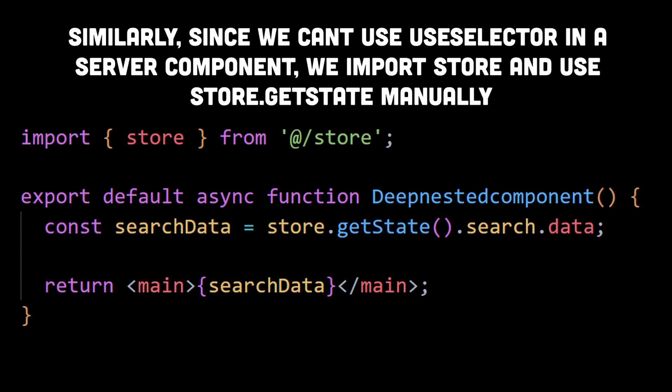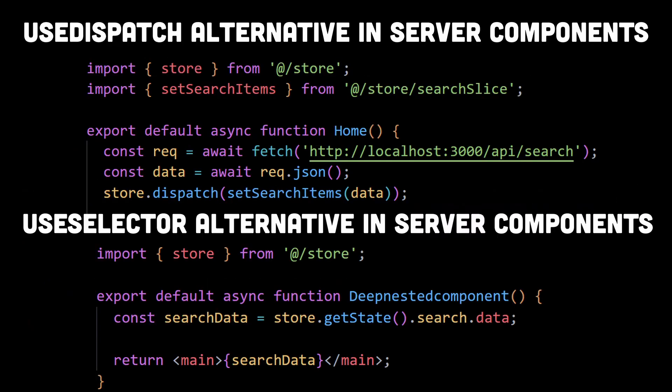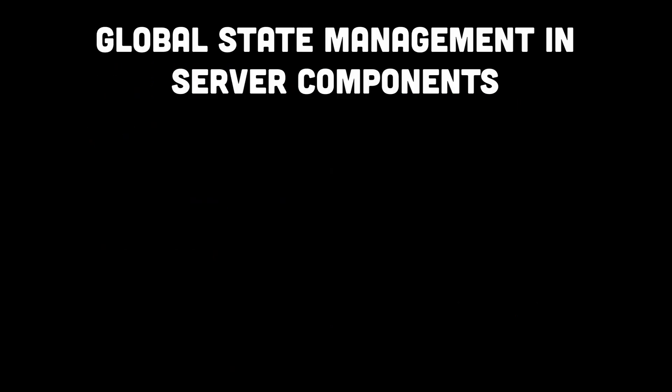Similarly, even for accessing state from the Redux store within a server component, we would have to use the imported Redux store itself and use its getState method to fetch the desired state, instead of using the useSelector hook. Now because we have to manually import the store and use store.dispatch or store.getState, it's no longer a hook, and therefore our server component is able to store or retrieve items from the global state.